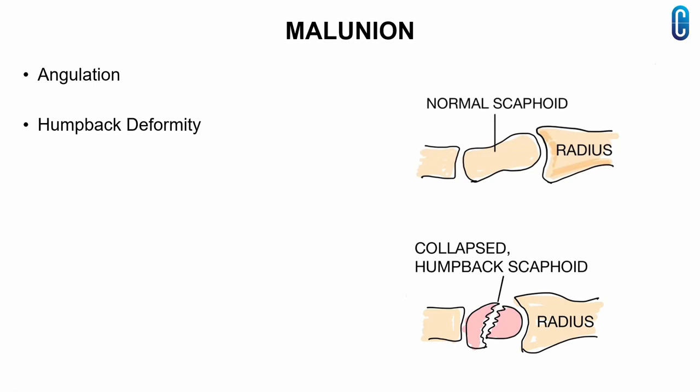Malunion of the scaphoid results from angulation of the proximal and distal parts in the setting of a fracture through the waist. This results in humpback deformity of the scaphoid, as shown in the figure. This can result in progressive collapse of the scaphoid with nonunion and wrist instability. This condition may also be associated with dorsal intercalated segment instability, or DISI.